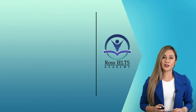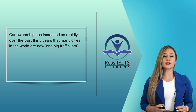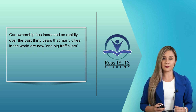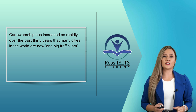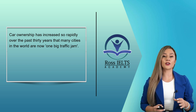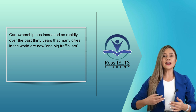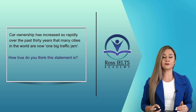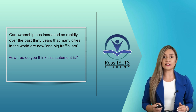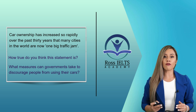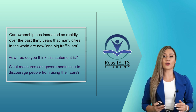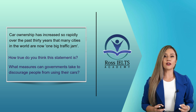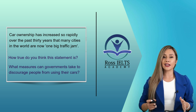Here's the question statement: 'Car ownership has increased so rapidly over the past 30 years that many cities in the world are now one big traffic jam.' We should read it very carefully and highlight the keywords. The question then asks: 'How true do you think this statement is? What measures can governments take to discourage people from using their cars?' Here we have two questions about the given statement, so the question type is a double question.